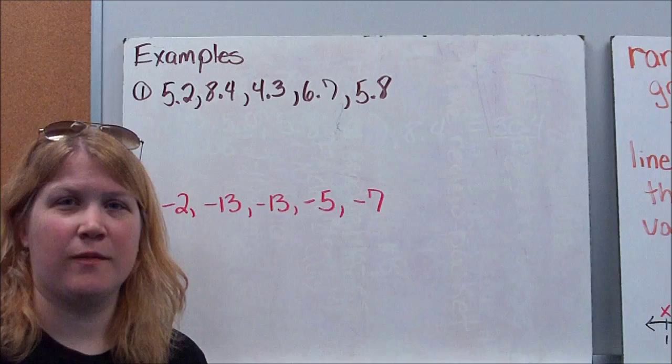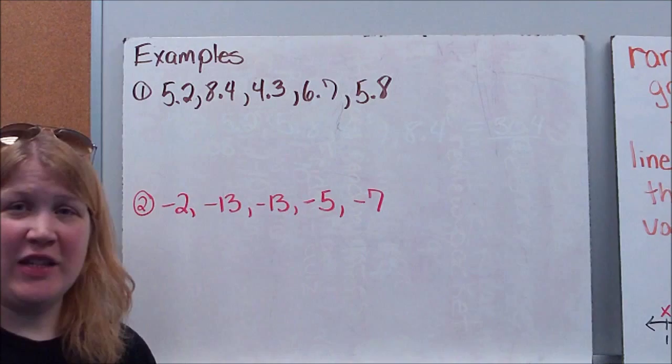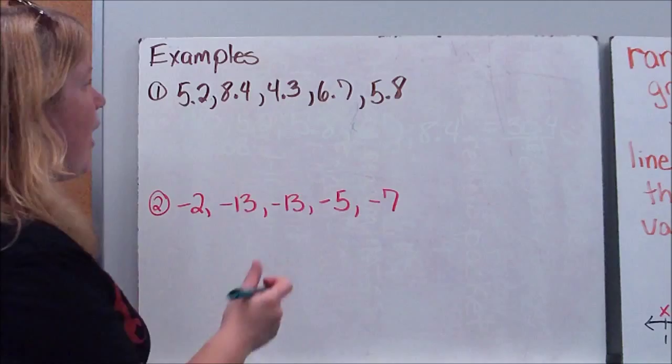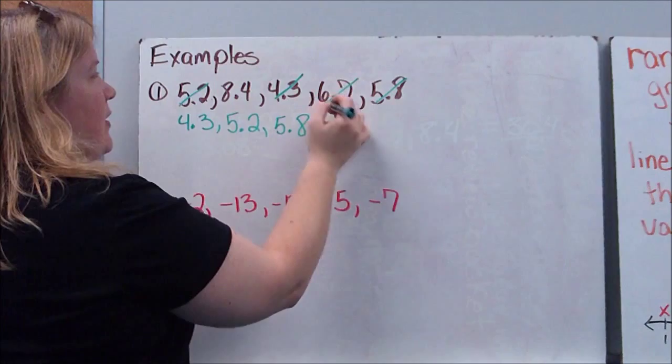All right, so we're going to take a look at a couple examples. The first thing that we always want to do is make sure that our data is in the right order. So the first thing I'm going to do is rewrite it. What I like to do is if it's possible, if you're in a book you can write in or you're on a worksheet, cross them out as you go so you don't get confused. So remember, we're starting with our smallest and working our way up. So my smallest number is 4.3, then I've got a 5.2, 5.8, 6.7, and finally an 8.4.